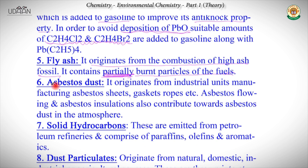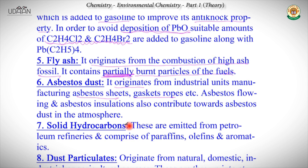Another type of particulate matter is asbestos dust. Asbestos is a high atomic weight metalloid. Asbestos dust originates from industrial units manufacturing asbestos sheets, gasket ropes, etc. Asbestos flooring and insulations also contribute to asbestos dust in the atmosphere. When asbestos is present in atmosphere, it causes harm by getting deposited into bodies of living organisms and malfunctioning within them.